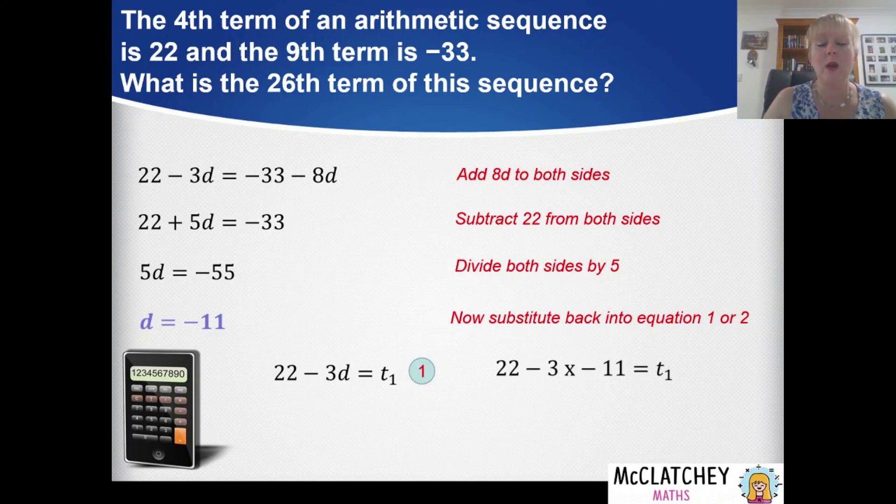So if I now put that inside my equation: 22 take away 3 multiplied by negative 11. Now negative times negative equals positive, so I'm going to have 22 plus 33. The first term is going to be 55. So now I've got my first term and I've got my common difference.